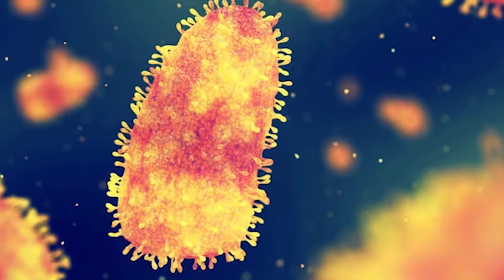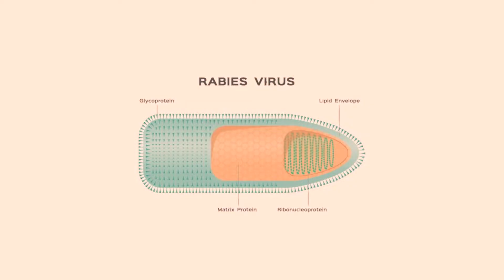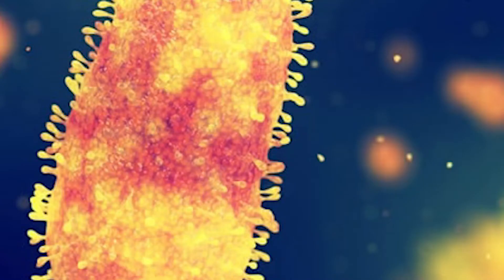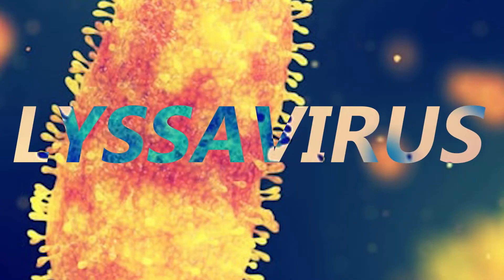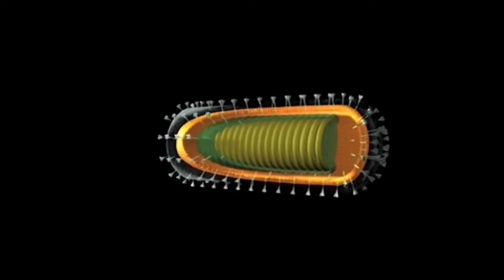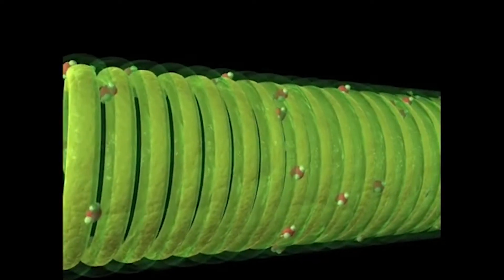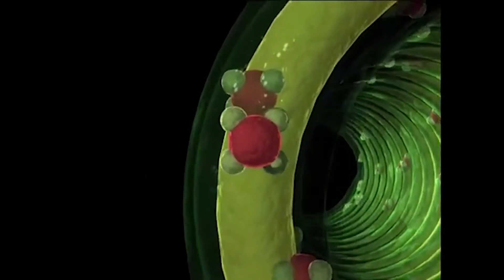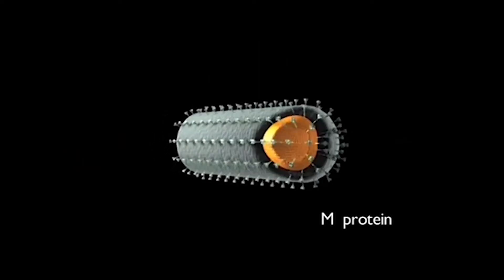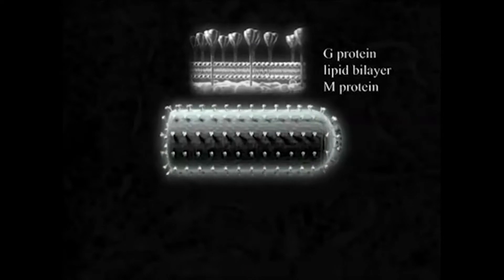This is what a rabies virus looks like — it has the shape of a bullet. It's called Lyssavirus. The Lyssavirus genome has a negative-sense single-stranded RNA molecule that encodes five viral proteins: Polymerase L, matrix protein M, phosphoprotein P, nucleoprotein N, and glycoprotein G.